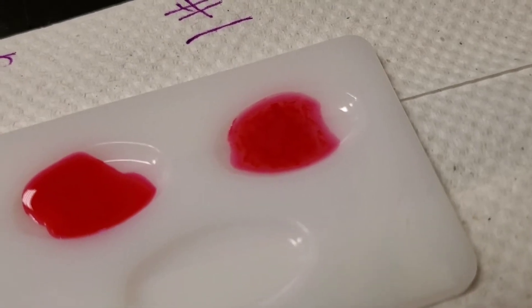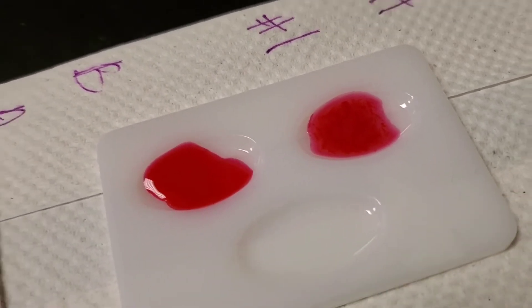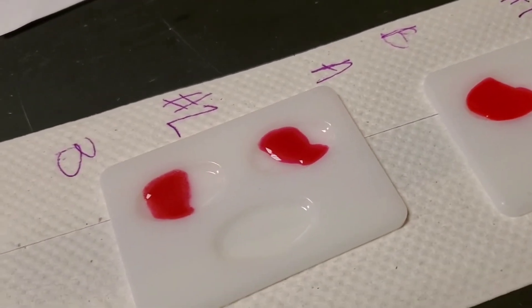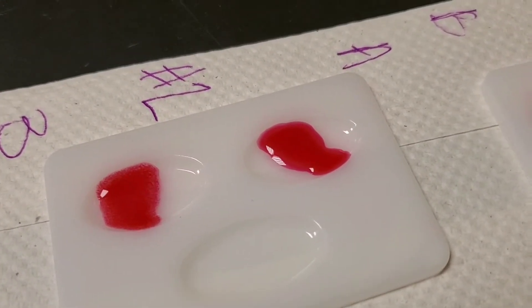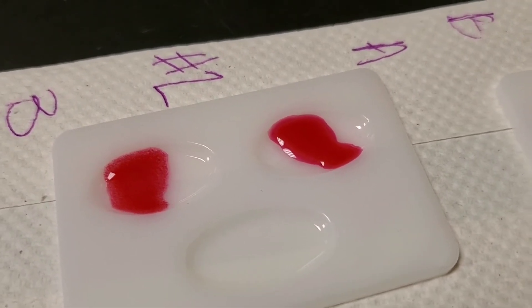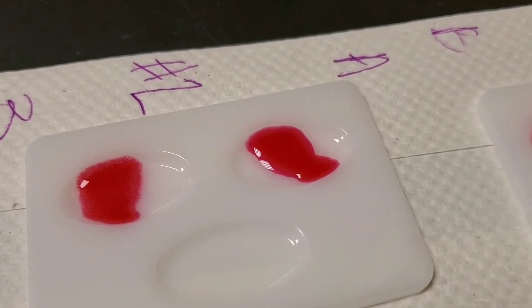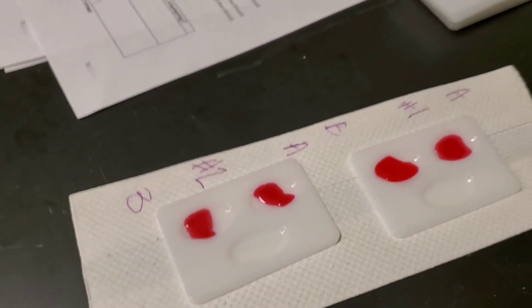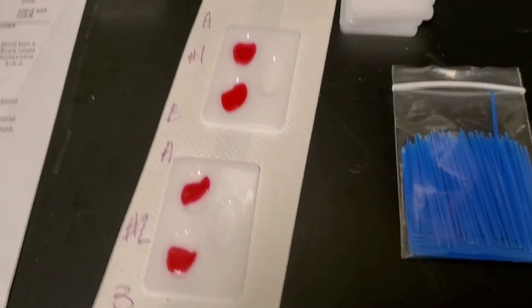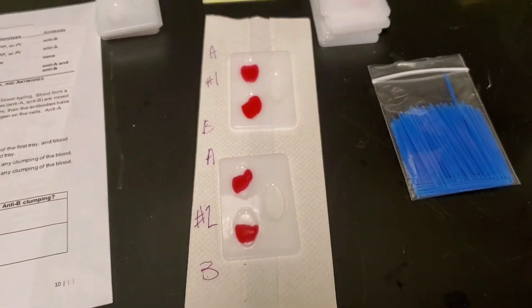And now in patient two we did the same thing. The only difference here is there's a different kind of blood, but anti-A in well plate A and anti-B in well plate B. There are the results, so you can interpret the results to complete your lab report. Let me know if you have any questions.